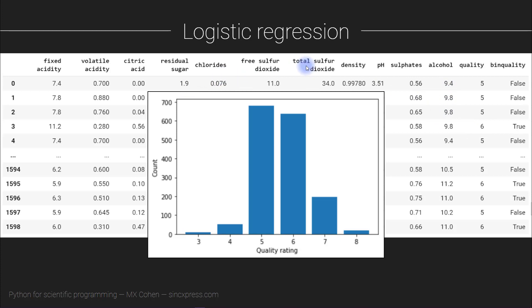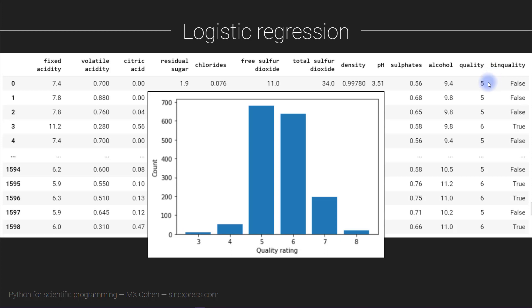You need to separate two different pandas DataFrames: one containing all predictor variables, and one containing only the dependent variable, which is bin_quality. The independent variables are all other columns except quality and bin_quality. In the previous video we used data.drop to remove a column — this time I'd like you to figure out a different way to achieve the same thing without using dot drop.